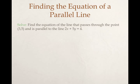Finding the equation of a parallel line. Find the equation of the line that passes through the point (3,5) and is parallel to the line 2x plus 5y equals 4. This is great. I know parallel lines have the same slope and I have my point (3,5). The only problem is I don't yet know my slope.